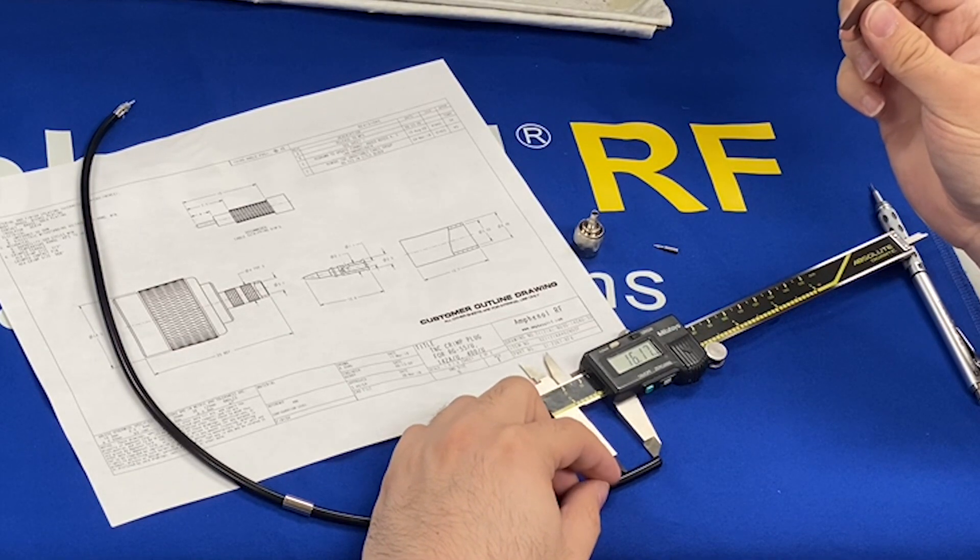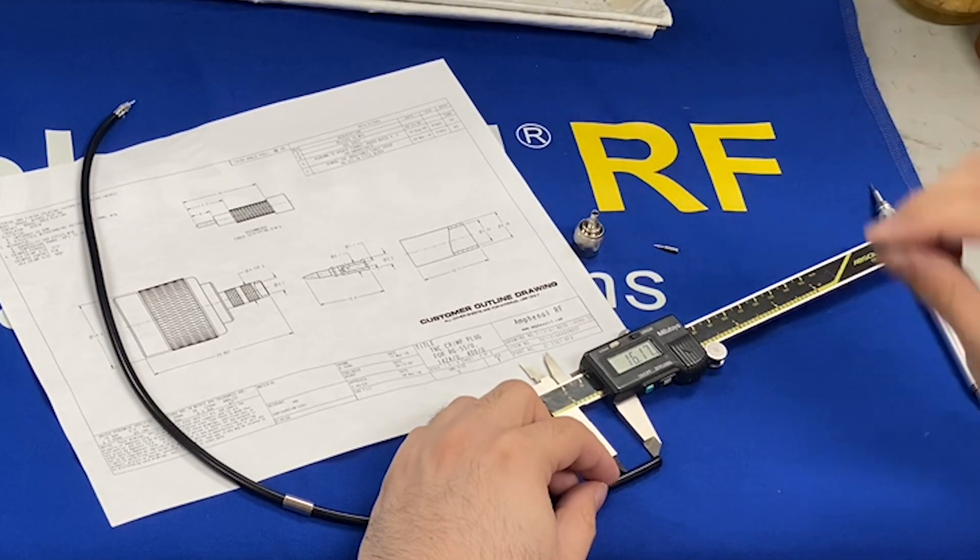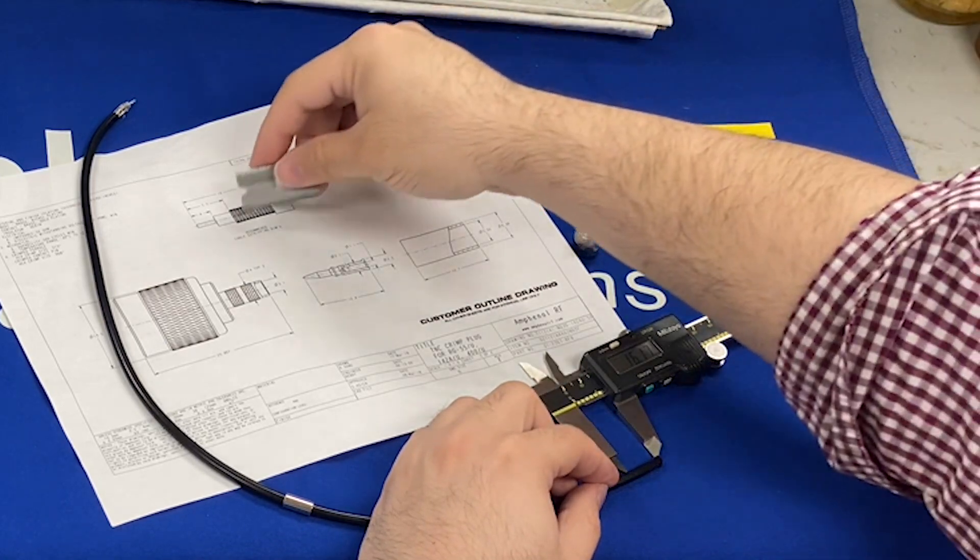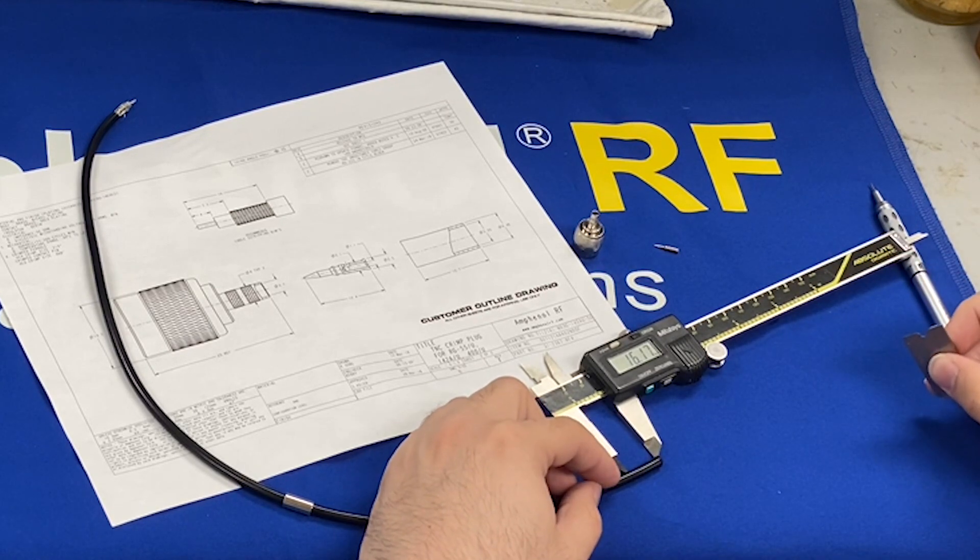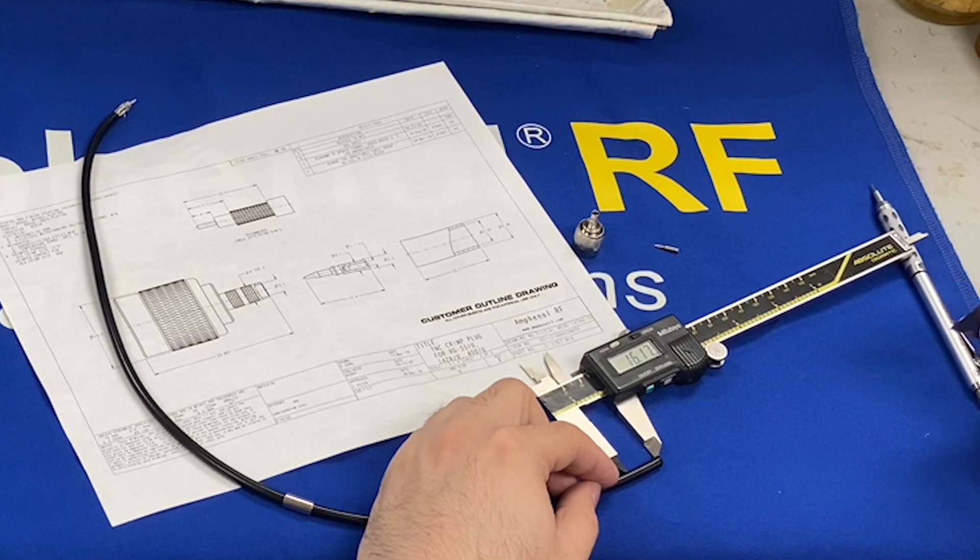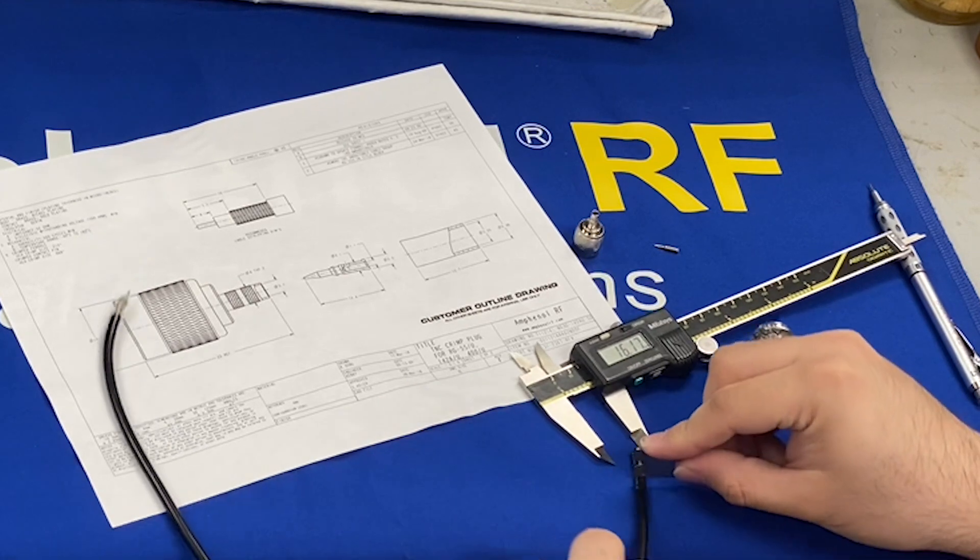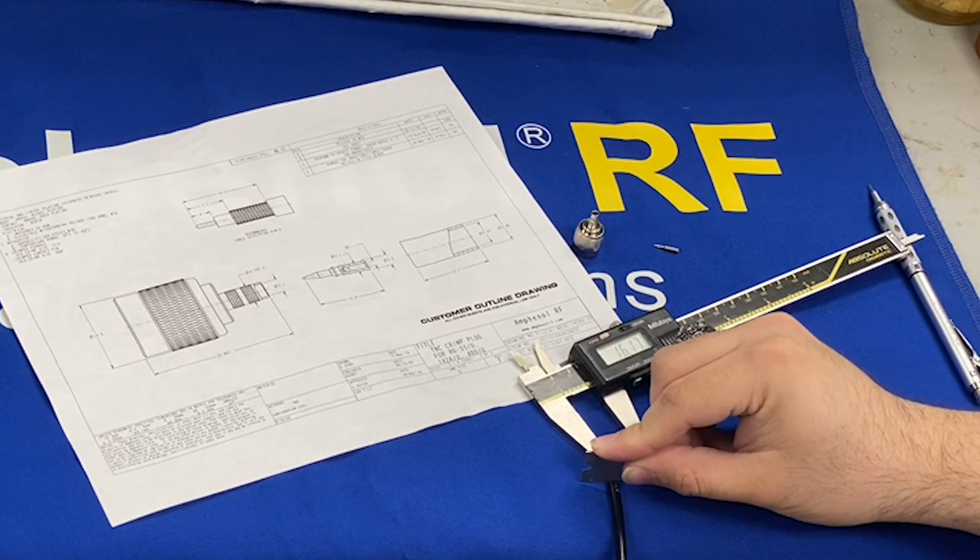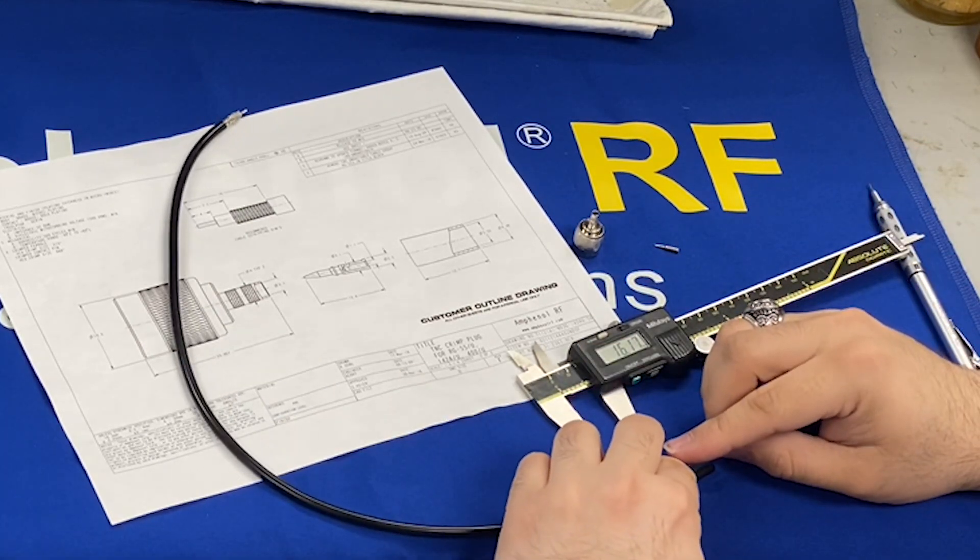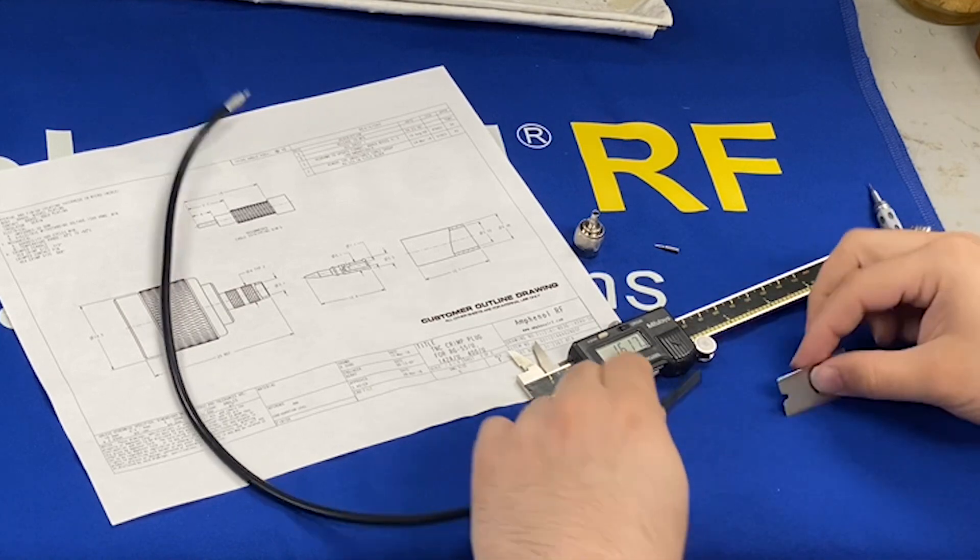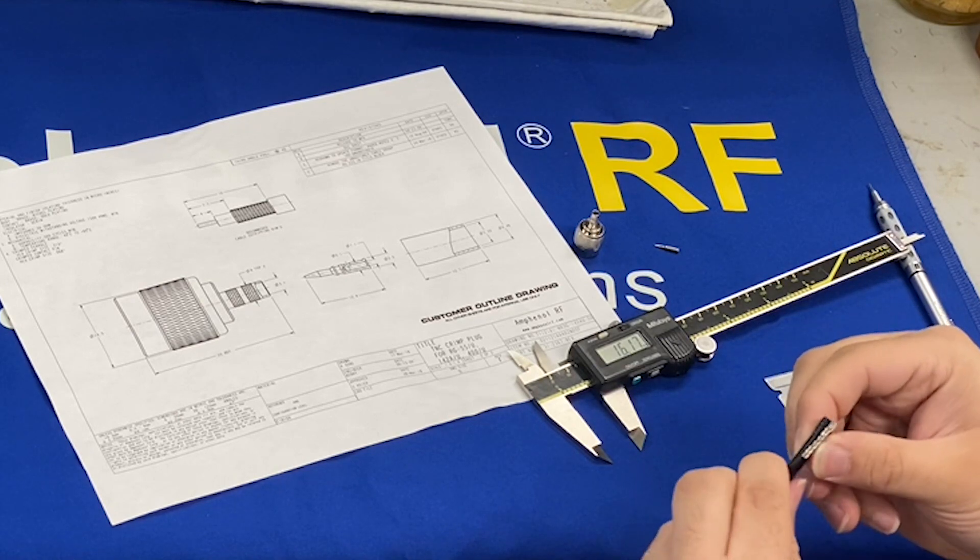A razor blade, an exacto knife, or a custom cable stripping tool may be used. Custom cable stripping tools generally have specified lengths already, so not every connector can accommodate an off-the-shelf cable stripping tool. A programmable cable stripping machine is much more beneficial if you're doing this in mass production. So I'll take 16 millimeters there. I will score a little more of that. The jacket and then a lengthwise cut.